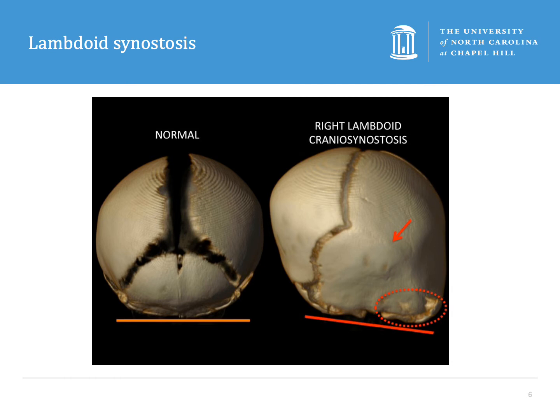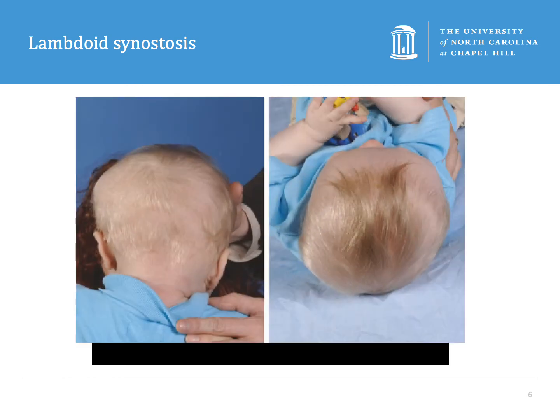Lambdoid synostosis is quite rare — it's unilateral fusion of the lambdoid suture resulting in flattening of the head. As you can see in this photo, the patient's right side is flattened. There's contralateral bossing and the ear on the ipsilateral side is pulled inferiorly and posteriorly. On imaging you'll also notice that the mastoid will be inferiorly displaced on the affected side. As with other synostoses, this is a surgical condition, however it is easily confused with positional plagiocephaly, which does not need surgical treatment.